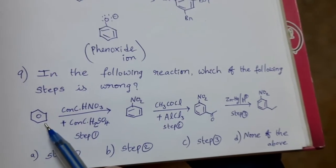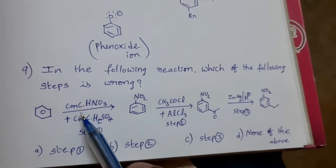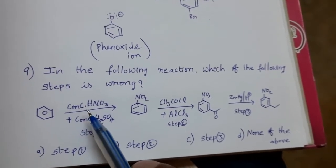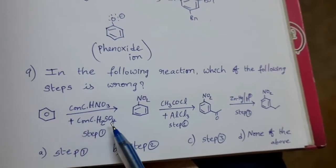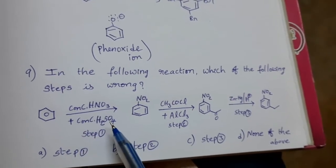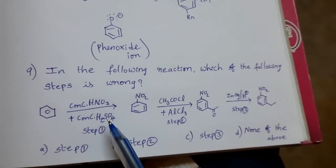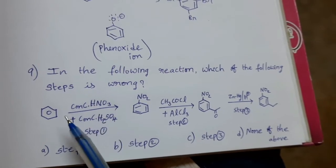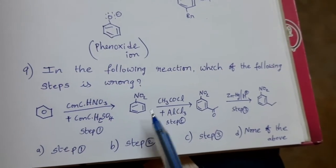Benzene is treated with nitration mixture, that is concentrated HNO3 plus concentrated H2SO4. We know that the electrophile NO2+ is substituted on the benzene ring, and we can get nitrobenzene.